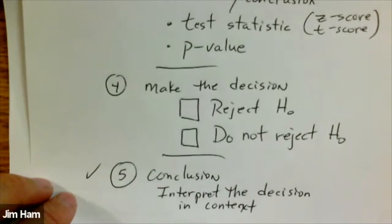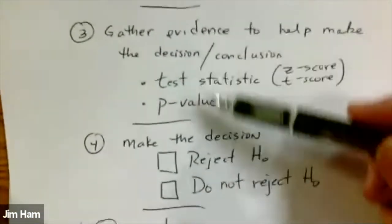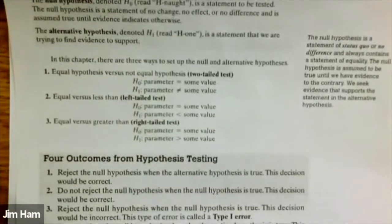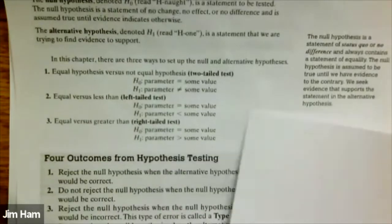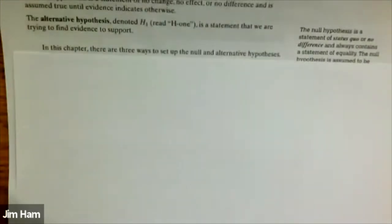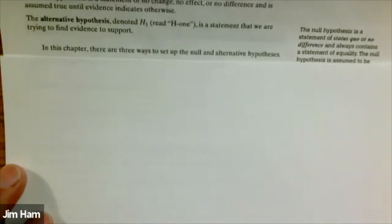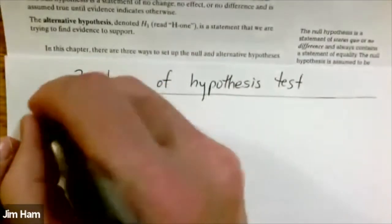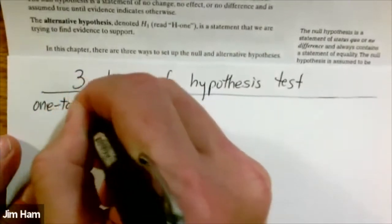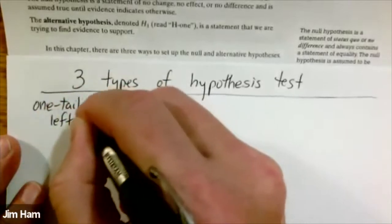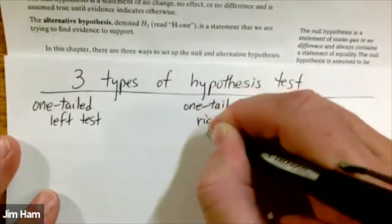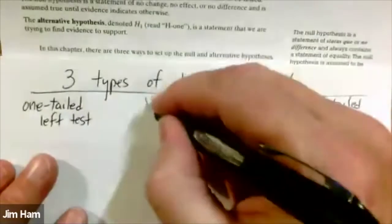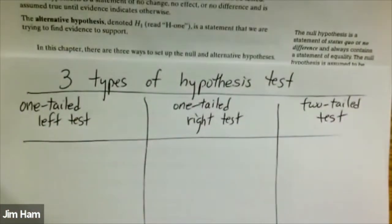This first section identifies how to write the hypotheses, how to identify the level of significance, and how to write the conclusion — all part of section 10.1. The other two steps will be more specifically outlined in the later sections. There are three different kinds of hypothesis tests: a one-tailed left test, a one-tailed right test, and a two-tailed test.